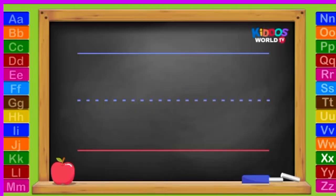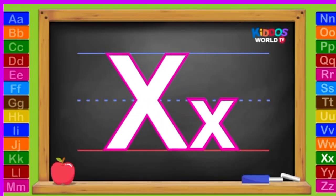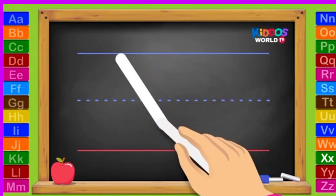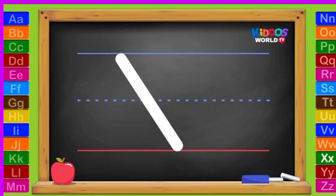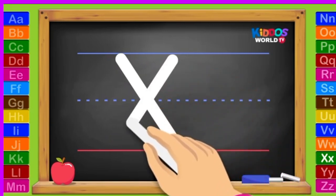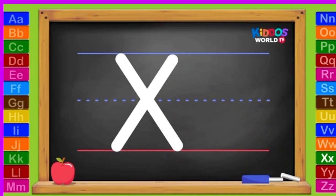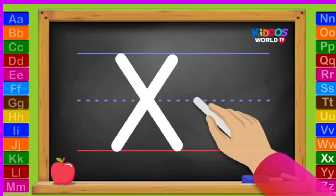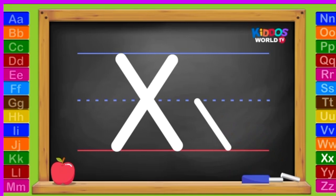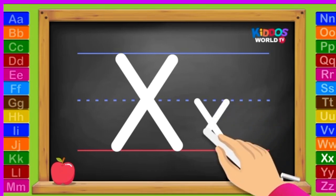And the next letter? X. Uppercase X. Start at the top and do a diagonal line down. Go back to the top and do another diagonal line the other way. Lowercase X. Slant down and another slant down the other way.